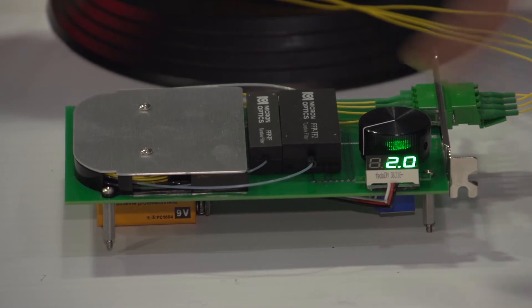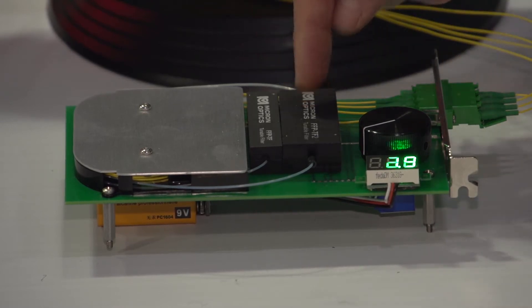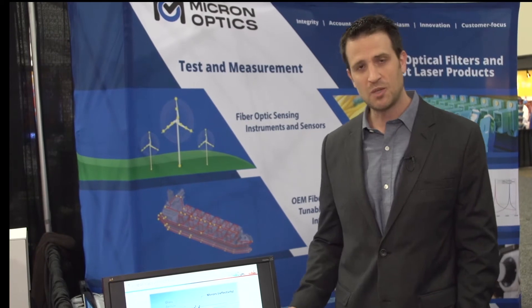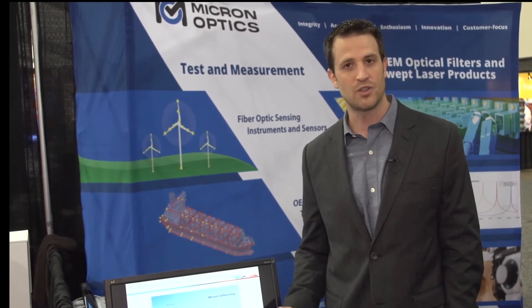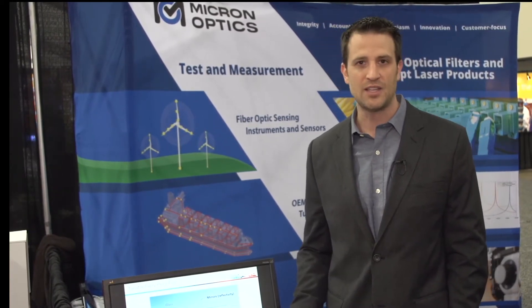The Fiber Fabri-Perot consists of two dielectric mirrors directly deposited to fiber end faces. The spacing between the mirrors determines the tuning range or free spectral range of the optical filter, whereas the finesse is determined by the reflectivity of the mirrors.